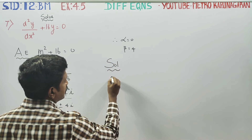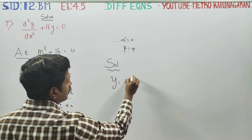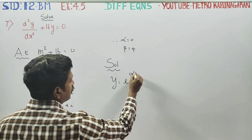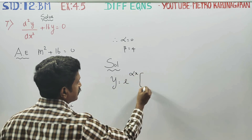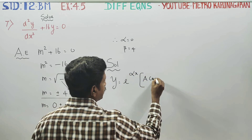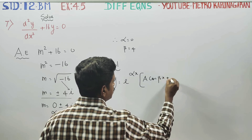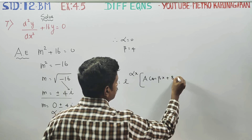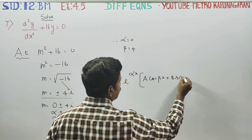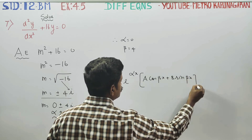The general solution for imaginary roots is: y = e^(alpha·x) times (a·cos(beta·x) + b·sin(beta·x)). This is the solution formula.